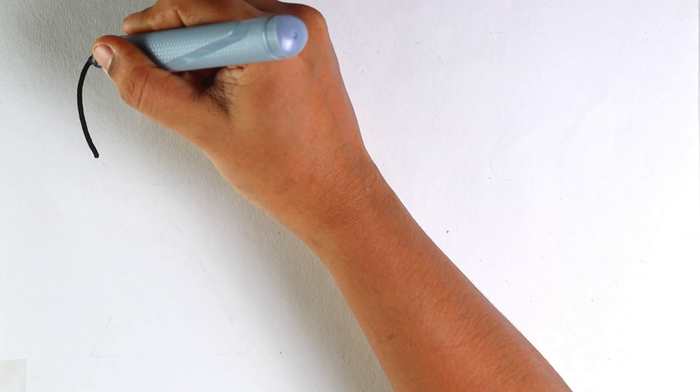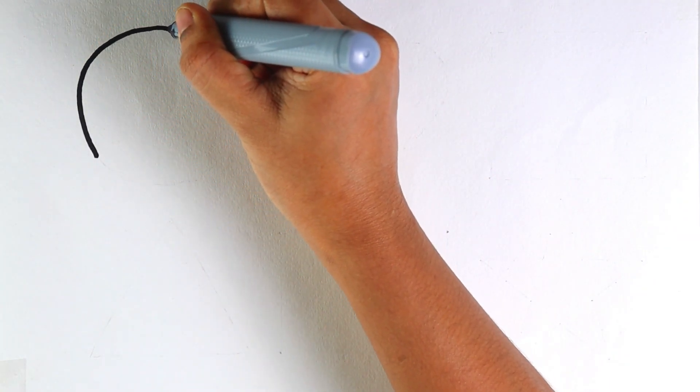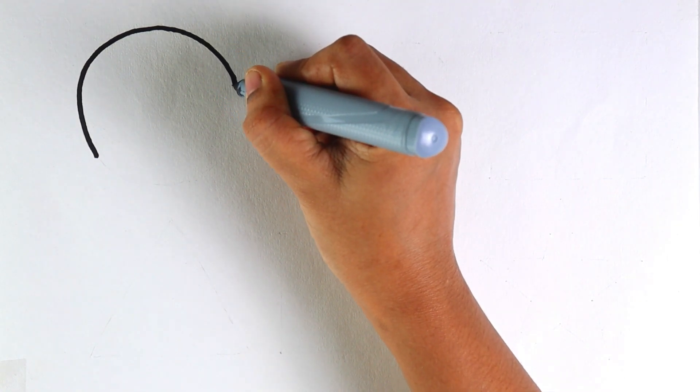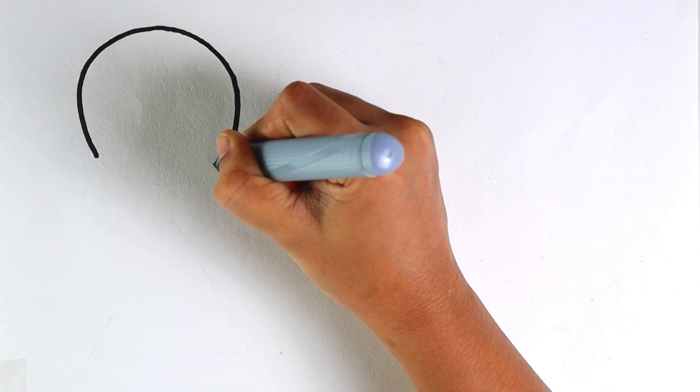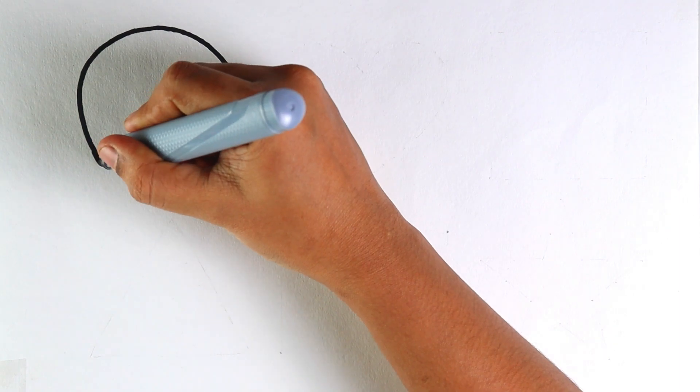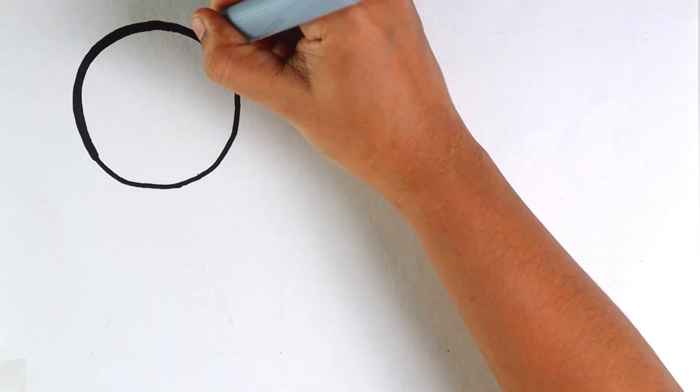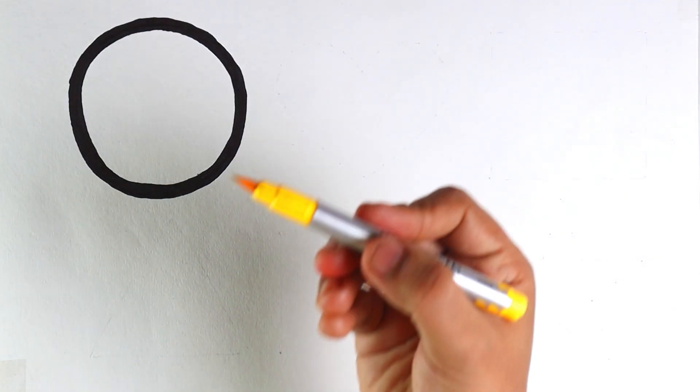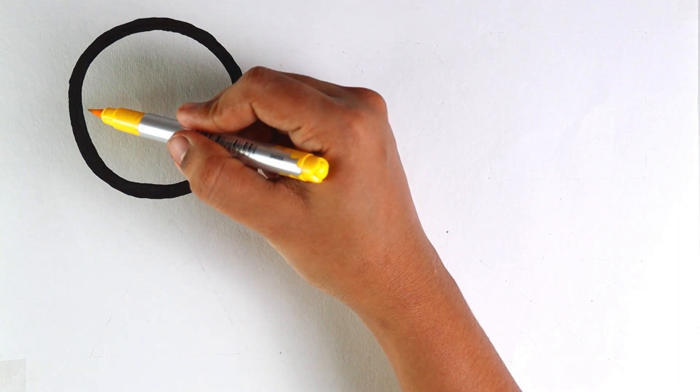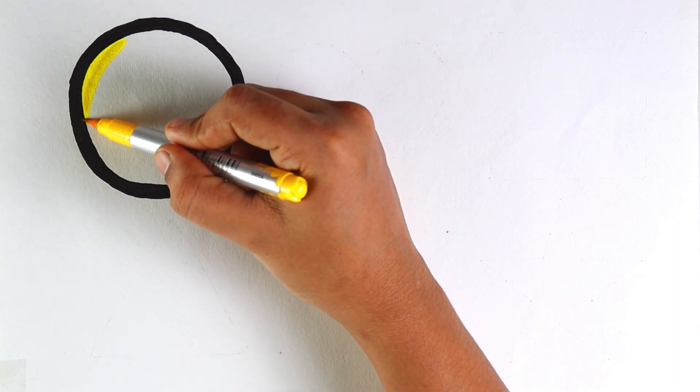Hello guys, welcome to my channel. Let's learn shapes today. I am drawing a circle. Now let's make it look more visible with black color. Now I am going to color the circle with yellow color.